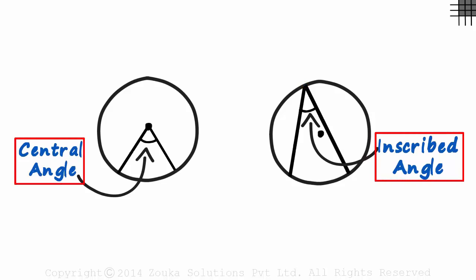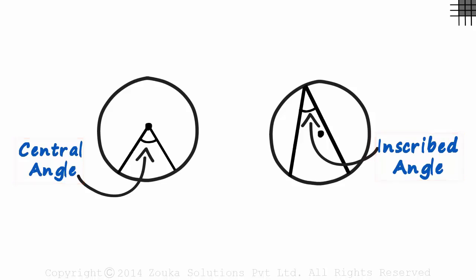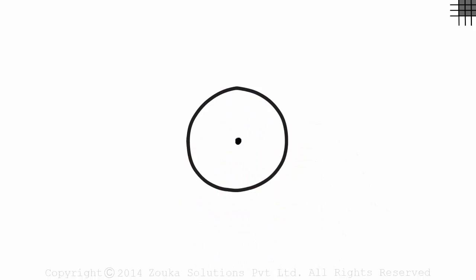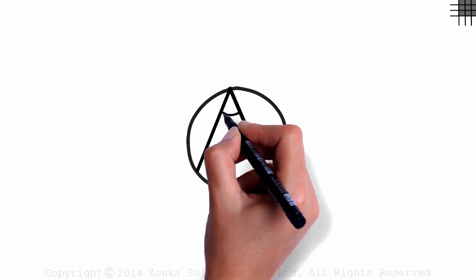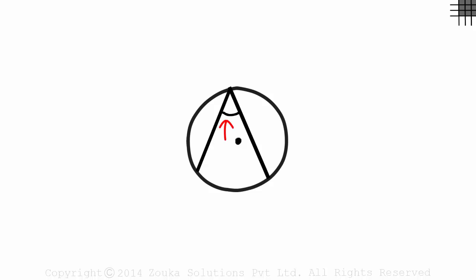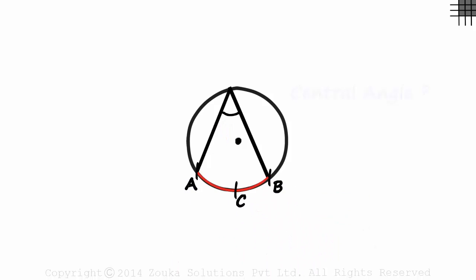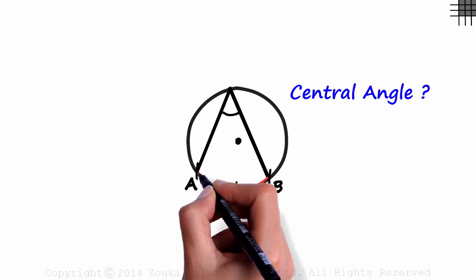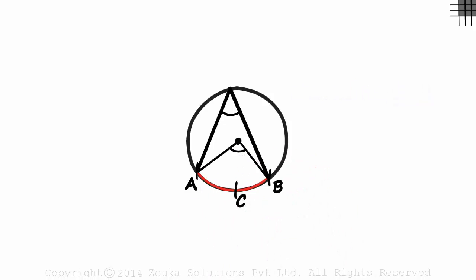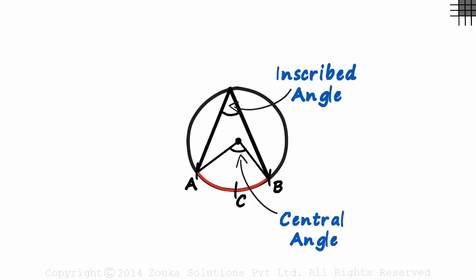These two angles are related in a special way. Let's draw an inscribed angle — the vertex is on the circumference. This angle subtends an arc; let's call it arc ACB. To draw the central angle of the same arc, we place the vertex at the center. This is the central angle and this is the inscribed angle.